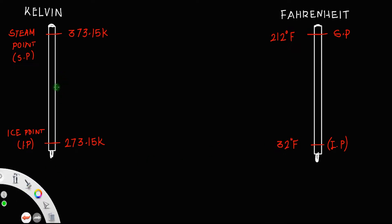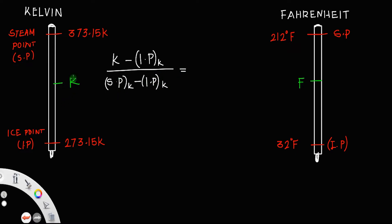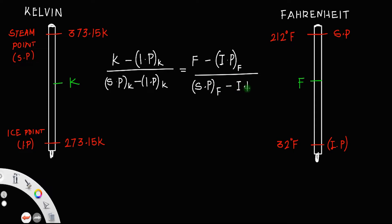Suppose we have a temperature K Kelvin equal to F Fahrenheit. Then we can relate them using the relation: K minus the ice point of the Kelvin scale, divided by the steam point minus the ice point of the Kelvin scale, is equal to F minus the ice point of Fahrenheit, divided by the steam point of Fahrenheit minus the ice point of Fahrenheit.